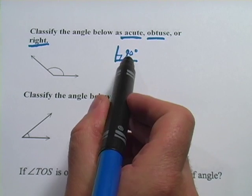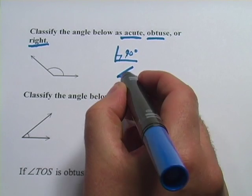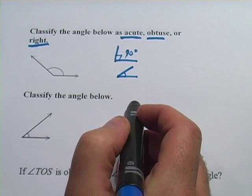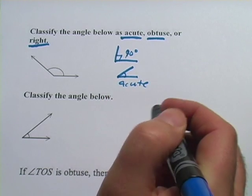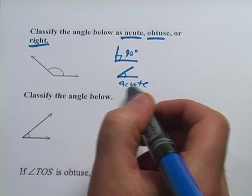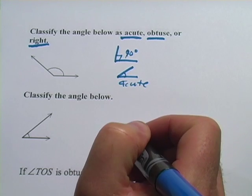Anything that's smaller than 90 degrees, or I like to think of it as pointier, that one is going to be acute. Another word for acute is sharp, so I like to think of these as sharp angles.